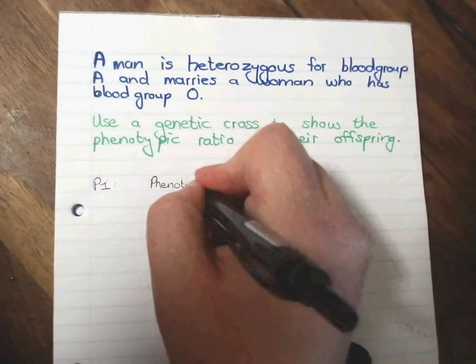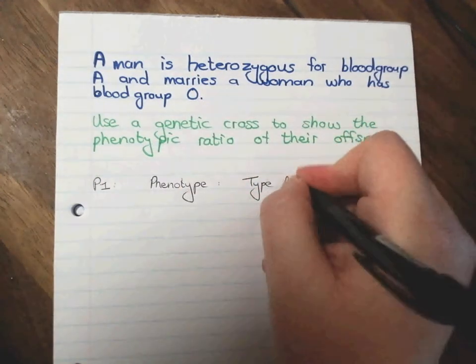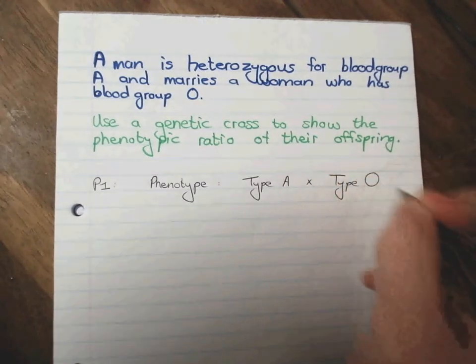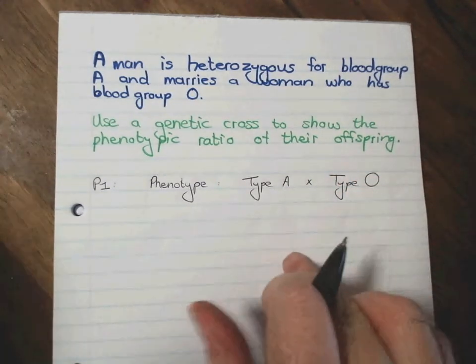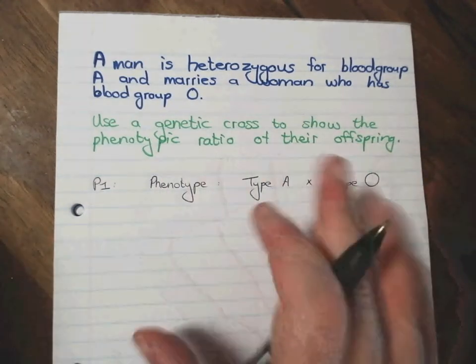Okay, and we have a type A, that is the man, who got married to a type O. Because this is not an X-linked disease, we don't need to know which one's the male and which one's the female.